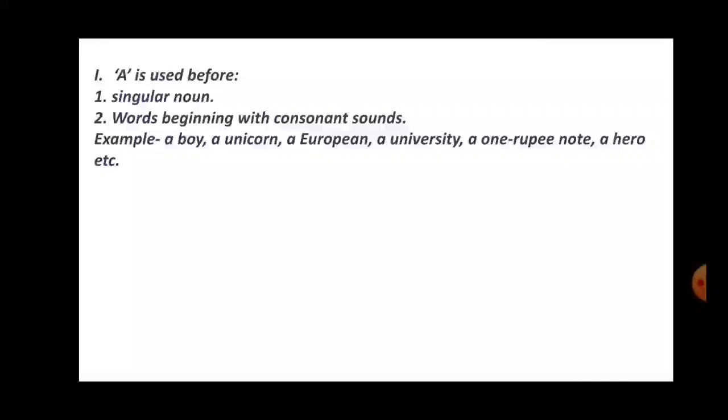Like for example, you see a boy. Boy, B, consonant. Unicorn. Here you see U is given, a vowel. But we are using A here because the pronunciation is consonant. It has consonant sound. U. Its pronunciation is like Y-O-U-U. That's why it will be A.